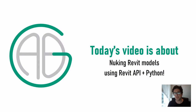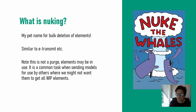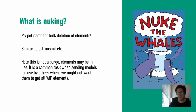G'day there. You're watching the Aussie BIM Guru, and today I've got a fun title: a tutorial using the Revit API and Python to do what I call nuking a Revit model. Nuking is my pet name for essentially bulk deleting elements out of Revit models, similar to add-ins such as eTransmit.